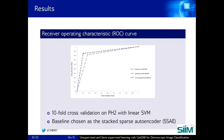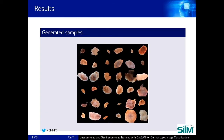Here is the ROC curve from a 10-fold cross-validation on the PH2 dataset with a linear support vector machine. We chose the stacked sparse autoencoder as the baseline for comparison — this is an unsupervised learning method that learns to reconstruct itself. We can see that the unsupervised CATGAN, denoted by the orange line, achieved higher sensitivity and specificity than SSAE, and the semi-supervised CATGAN would further improve the results. Some randomly generated samples from the generator are shown here — you can see that they are very diverse, of high contrast, and have a very similar look to real-world samples.